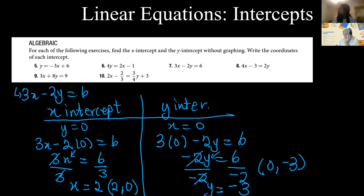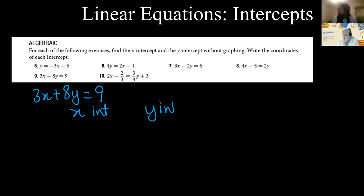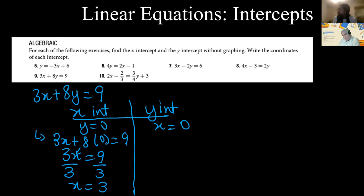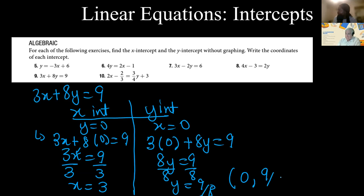Equation 9: 3x + 8y = 9. For the X intercept, set Y = 0: 3x + 8(0) = 9, so 3x = 9, divide by 3, x = 3. The X intercept is (3, 0). For the Y intercept, set X = 0: 3(0) + 8y = 9, so 8y = 9, divide by 8, y = 9/8. The Y intercept is (0, 9/8).